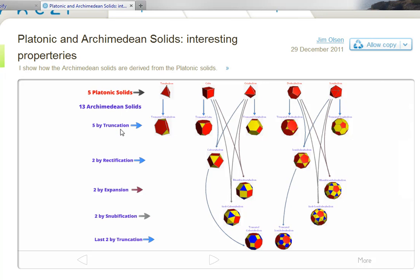Five are by truncating, two are by rectifying, two are by expanding, and two are by snubifying the original platonic solids. The last two Archimedean solids are found by truncating existing Archimedean solids.